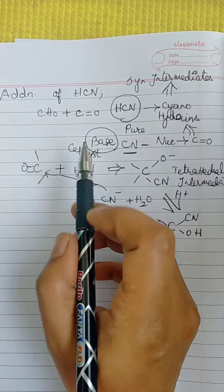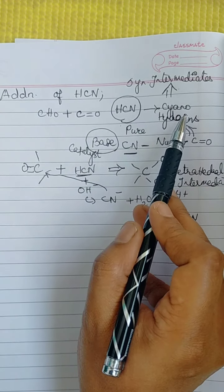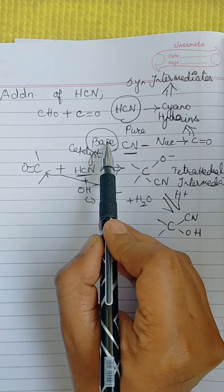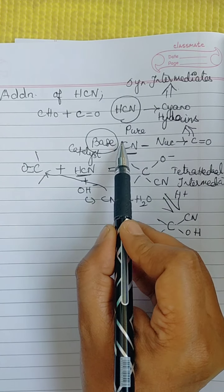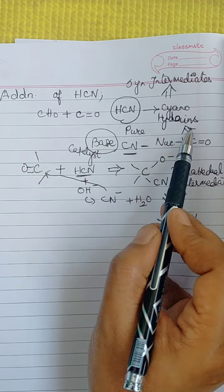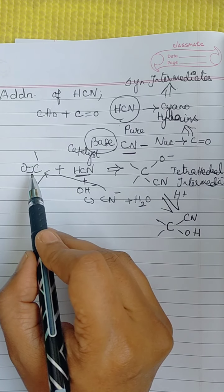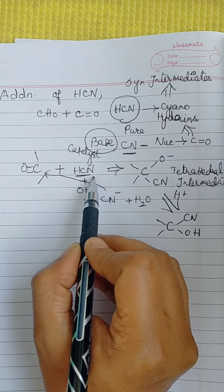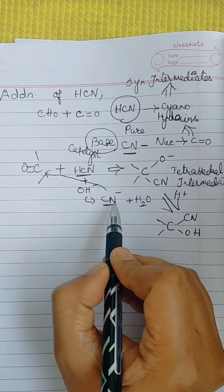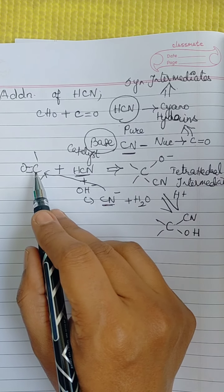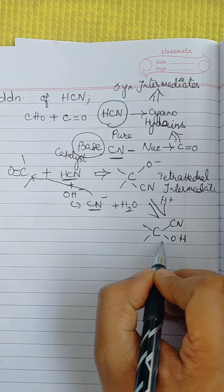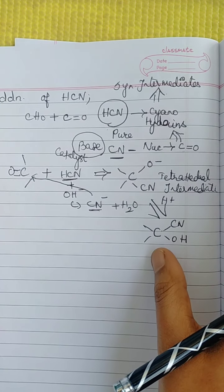When you add hydrogen cyanide to aldehydes or ketones, you get cyanohydrins, which are used as synthetic intermediates. For this reaction you need a base catalyst, which generates a potent nucleophilic cyanide group. This cyanide attacks the carbonyl carbon of aldehydes or ketones, forming a tetrahedral intermediate that is then converted to cyanohydrins.